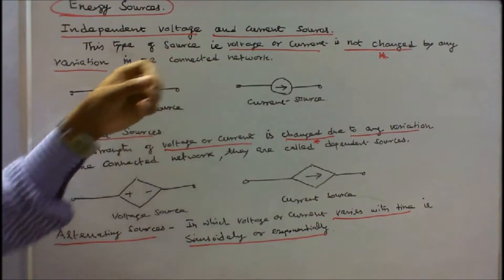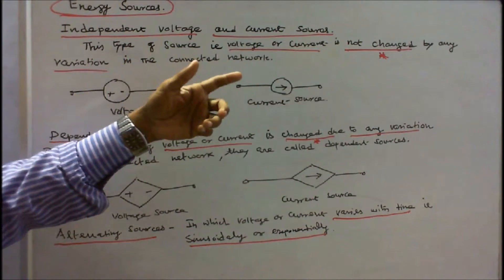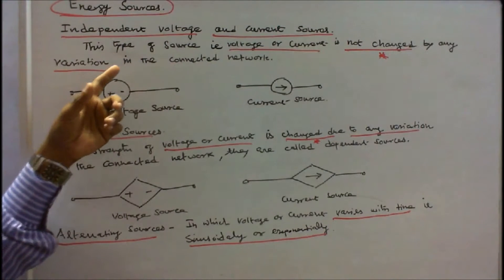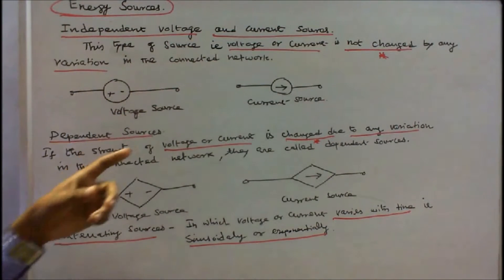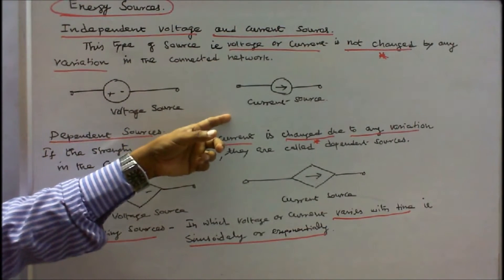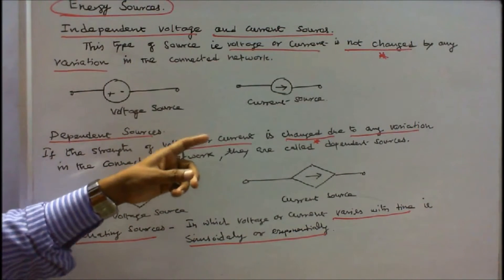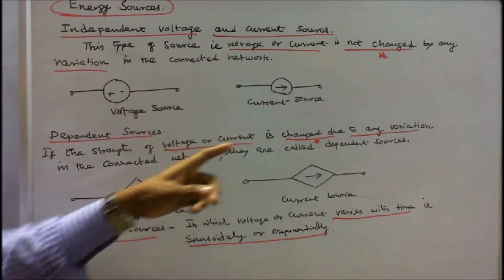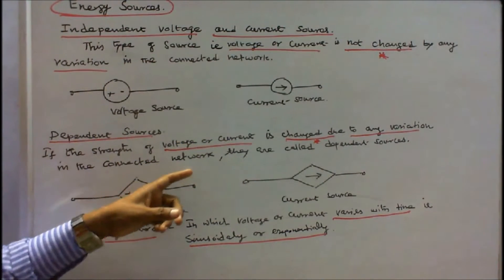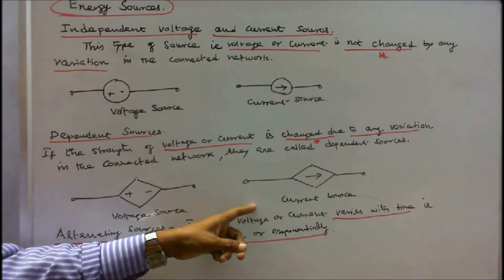The first type is independent voltage and current sources. In this type, the voltage or current is not changed by any variation in the connected network. This is the symbol of an independent voltage source, and this is the symbol of an independent current source. For dependent sources, if the strength of voltage or current is changed due to any variation in the connected network, they are called dependent sources. This is the symbol of a dependent voltage source, and this is the symbol of a dependent current source.